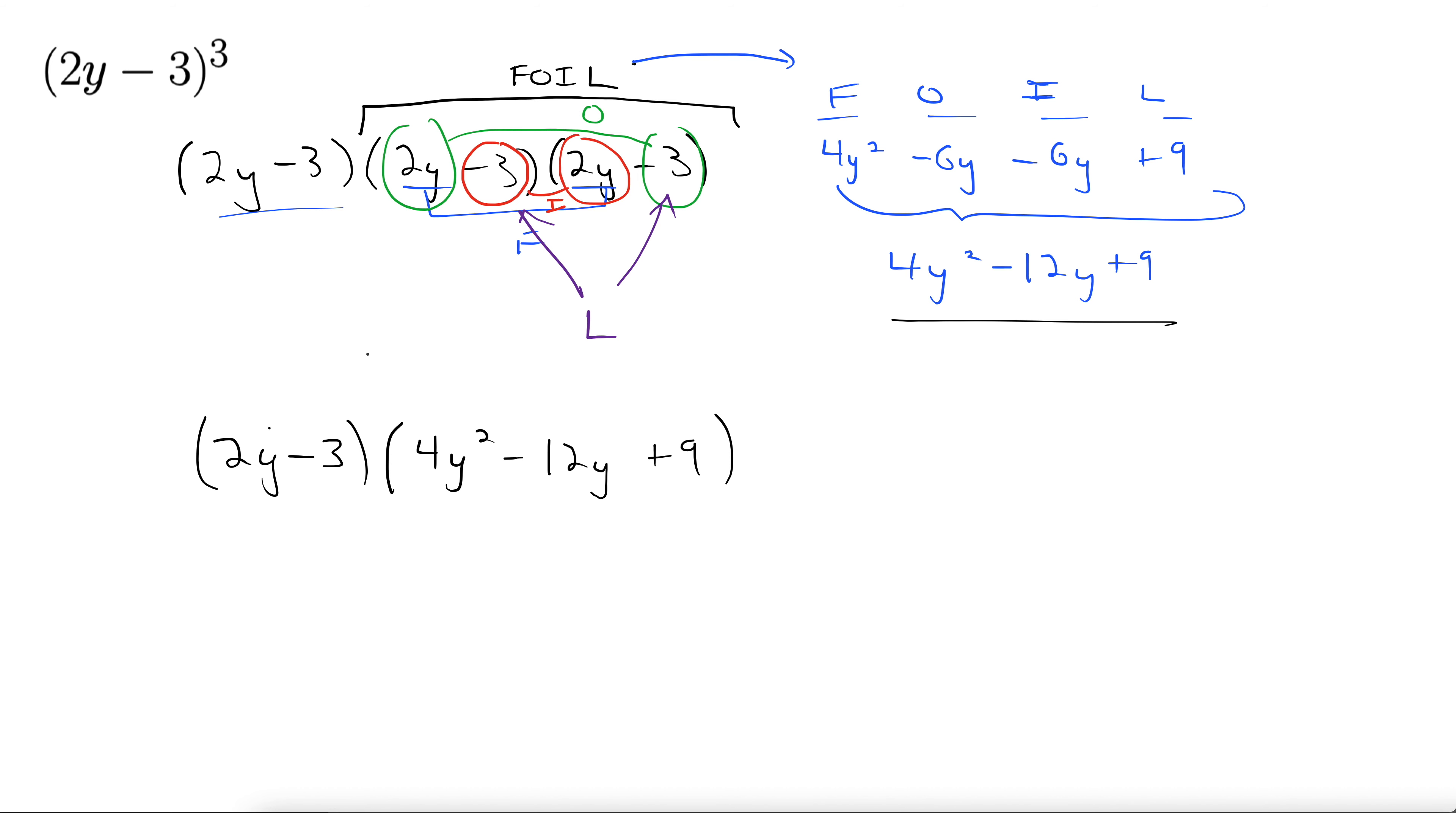Well, now we're down to a binomial times a trinomial. So we do the old double distribute here. I'm going to take this 2y through to each one of these terms, and then come back and take this negative 3 through to each one of these terms. Let's do it.